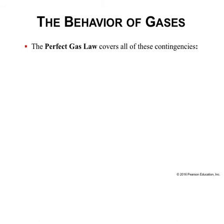One thing we can do to simplify the set of gas laws is to learn the ideal gas law. This is an equation that covers all contingencies and states that PV equals nRT, where P is pressure, V is volume, n is the number of moles of gas, R is a constant, and T is the temperature in degrees Kelvin. This accounts for Boyle's Law, Charles' Law, Avogadro's Law, and all of that. If you learn this equation, you can use it to establish initial and final conditions, which will inform you of the changes that take place when you change one of these variables.